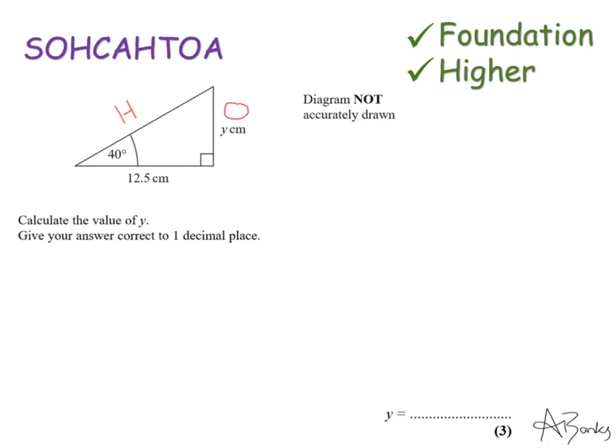My final side must be my adjacent. The other way of telling it's the adjacent is that it's always in between the angle that they've told me, or the angle they're asking me to find, and the right angle. Adjacent means next to. So it's next to both of these angles. That's my adjacent.